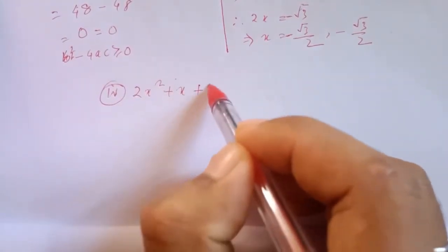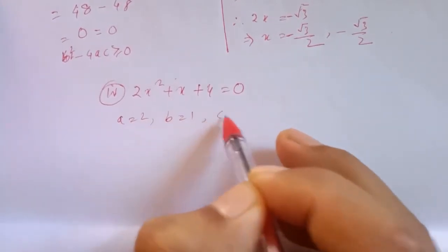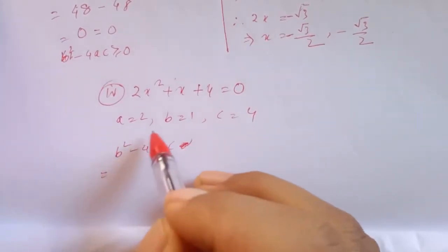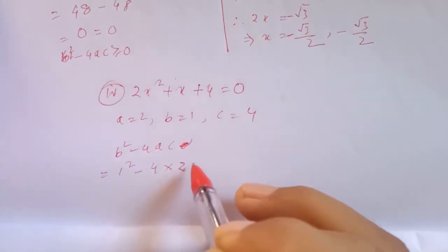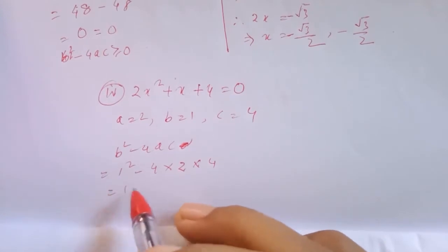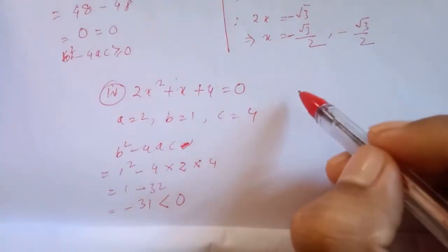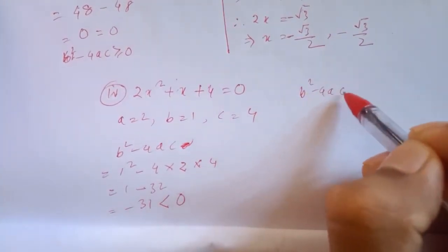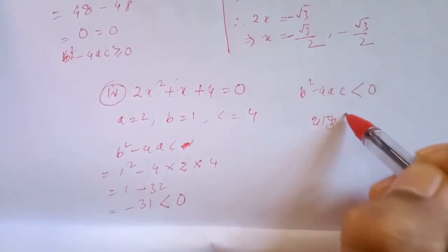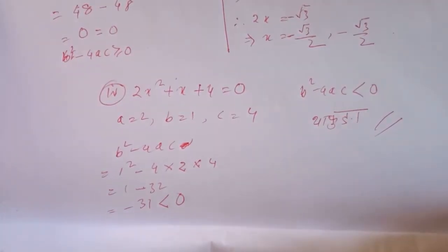2x squared plus x plus 4 equal to 0. A is equal to 2, B is equal to 1, and C is equal to 4. B squared minus 4ac equals 1 squared minus 4 into 2 into 4, equal to 1 minus 32, equal to minus 31. Because this discriminant is less than 0, because this video is done, it will be tough. Next video is 4.3.2.4.5.